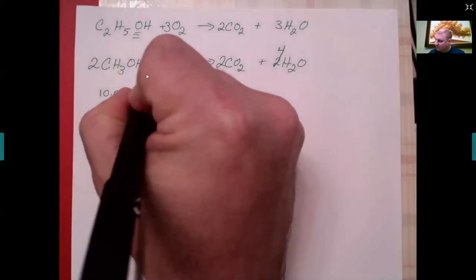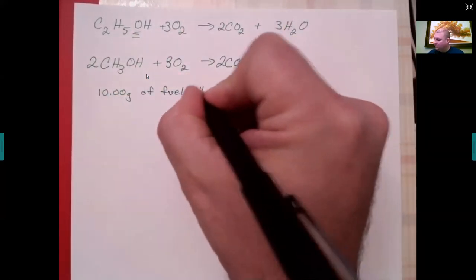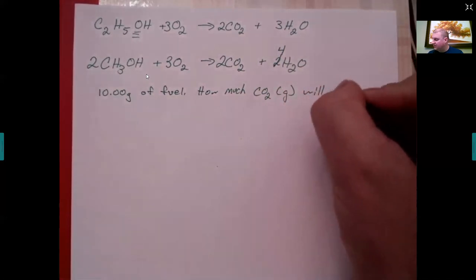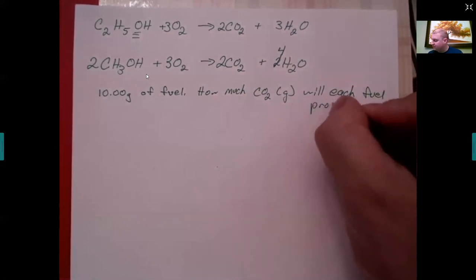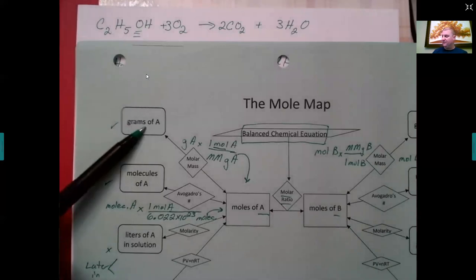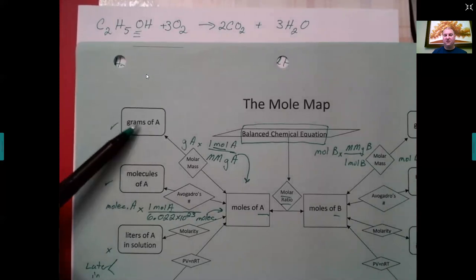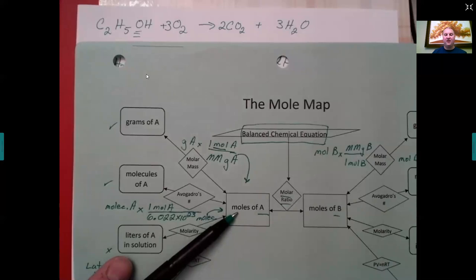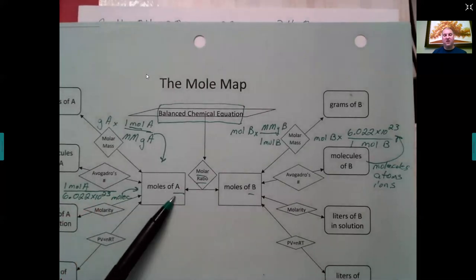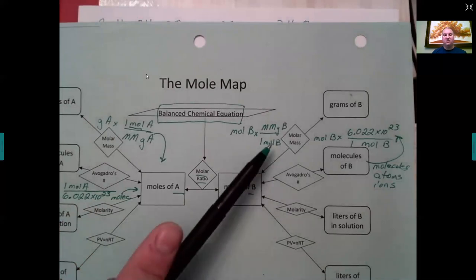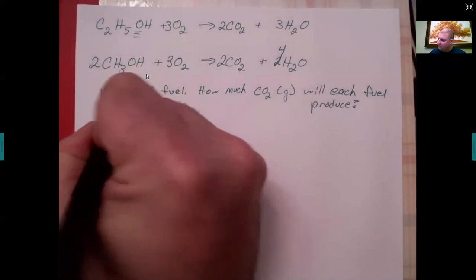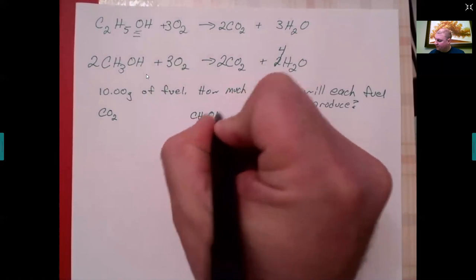With each of these reactions, let's say we have 10 grams of fuel and want to know how much CO₂ in grams each fuel produces. Using the mole map as a guide: starting from grams of methanol or ethanol, we convert to moles using molar mass, then use the molar ratio from the balanced equation to get moles of CO₂, then convert to grams of CO₂ using CO₂'s molar mass.